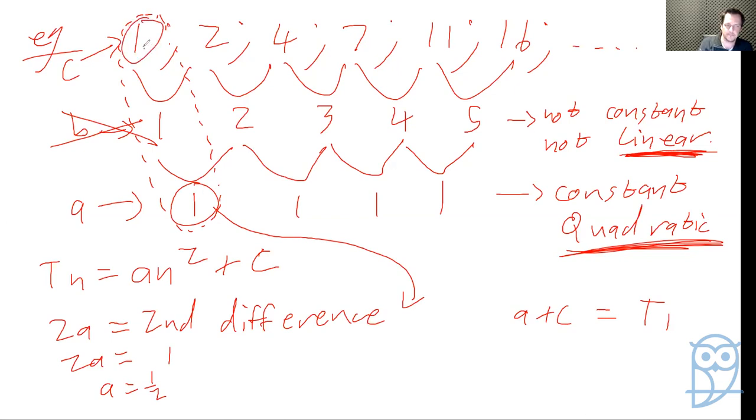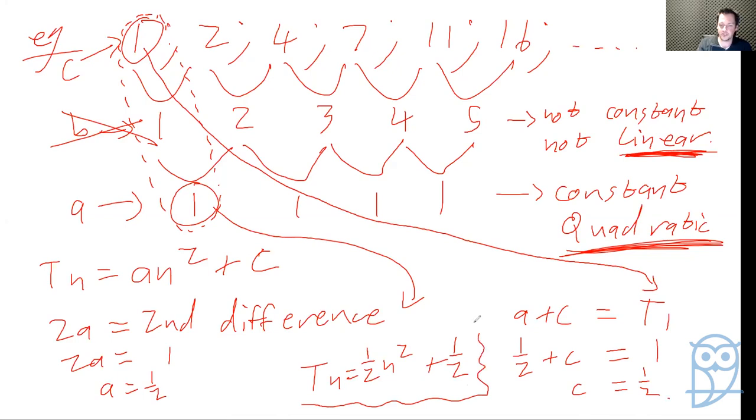And then we know that a plus c equals my first term, which is this one. And I know my value of a. a is a half plus c equals my first term of 1. And therefore, I know that c must also equal a half. So putting these together, I know that Tn equals a half n squared plus a half. Now, I'm pretty sure none of you would have really guessed that, because when you start looking for stuff, it's going to be whole numbers. And you're going to start trying different combinations of whole numbers, and that is going to waste a hell of a lot of your life.